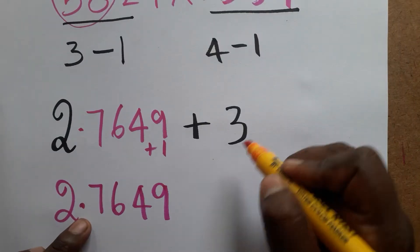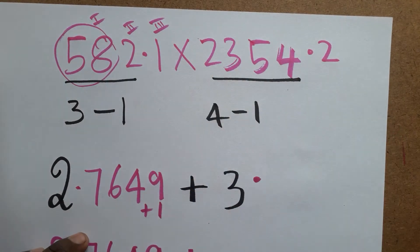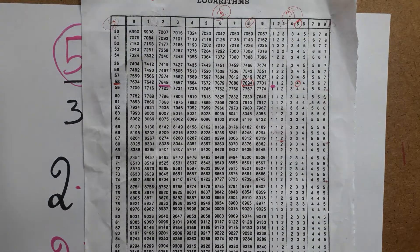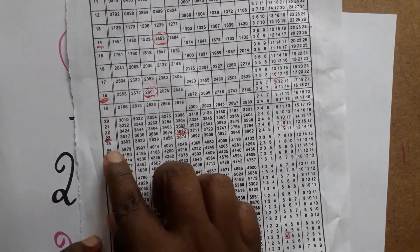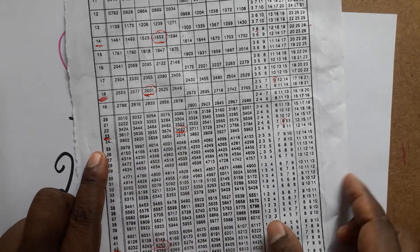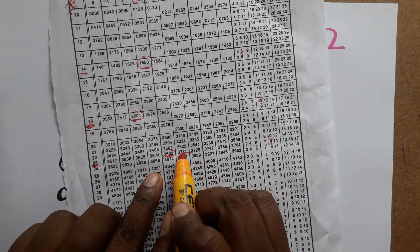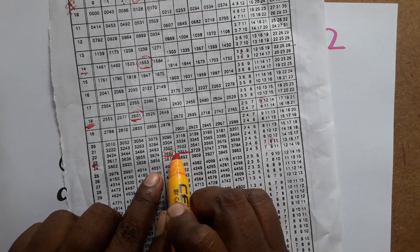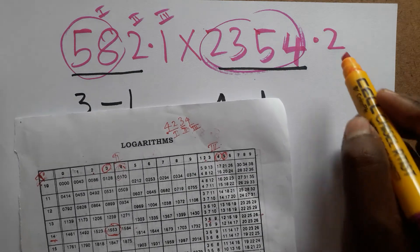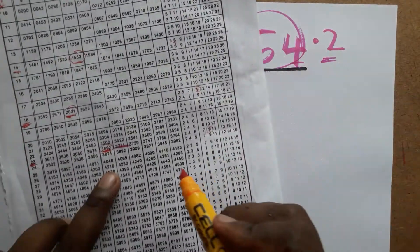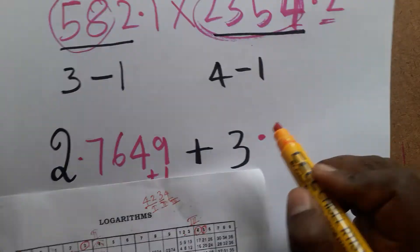Now for the second value, 3235.4, the characteristic is 3. We look up log of 3235.4. In the log book we find 23 in the front page, and for 235 the value is 3711. So for two three five, I get 3711.